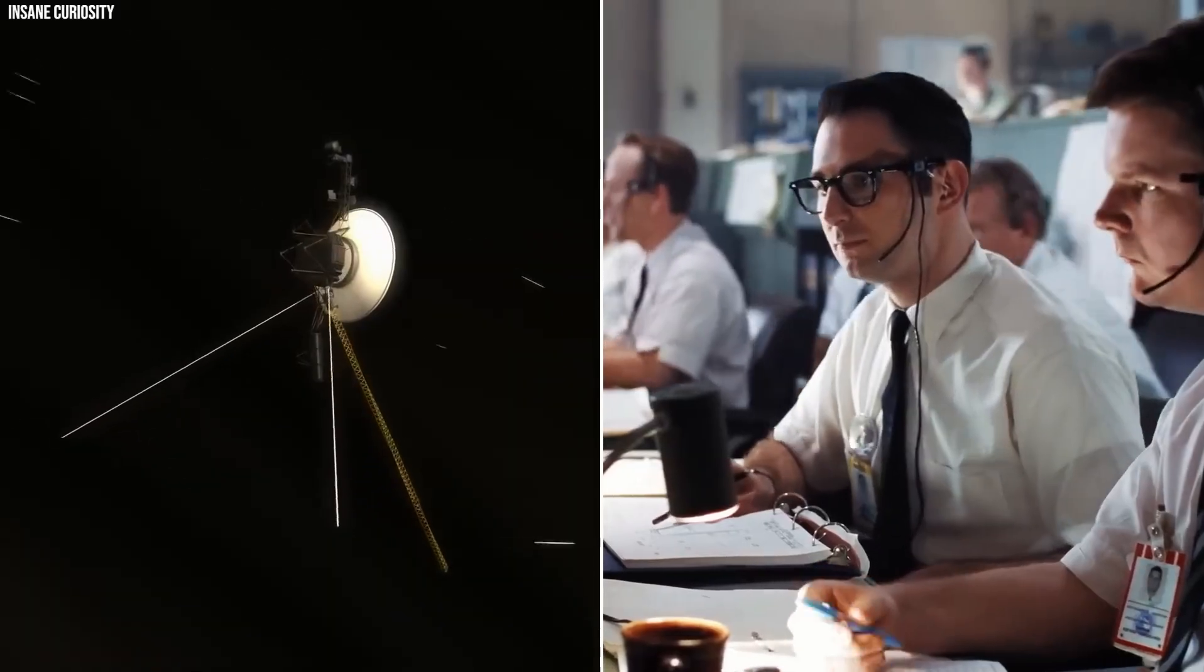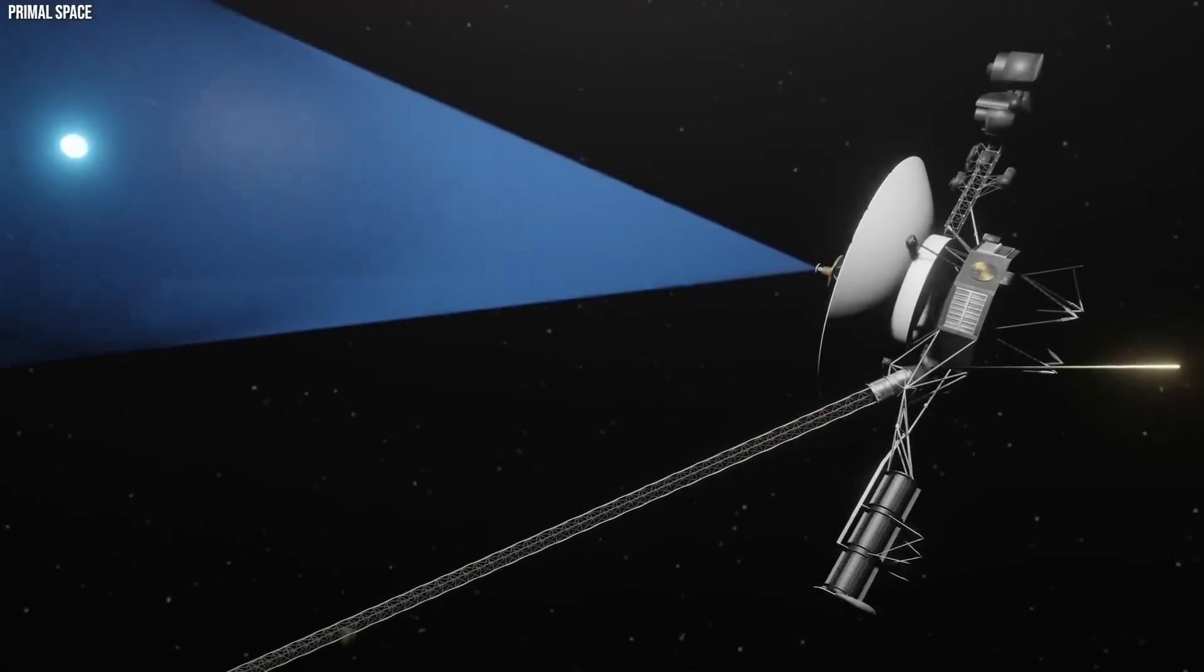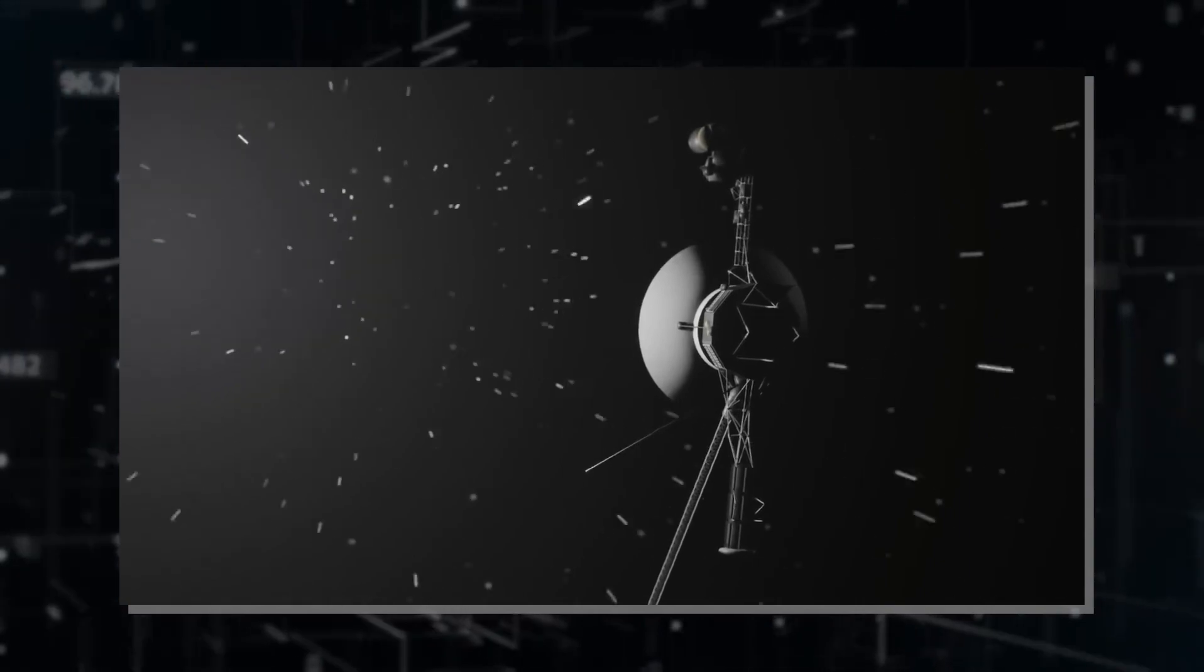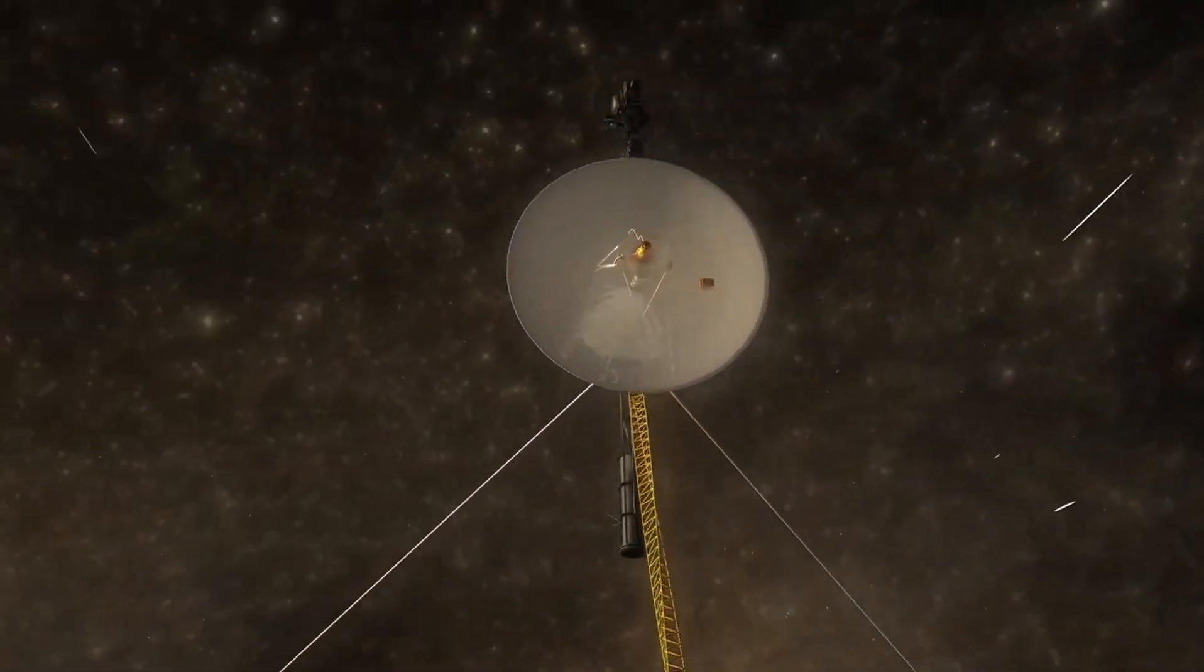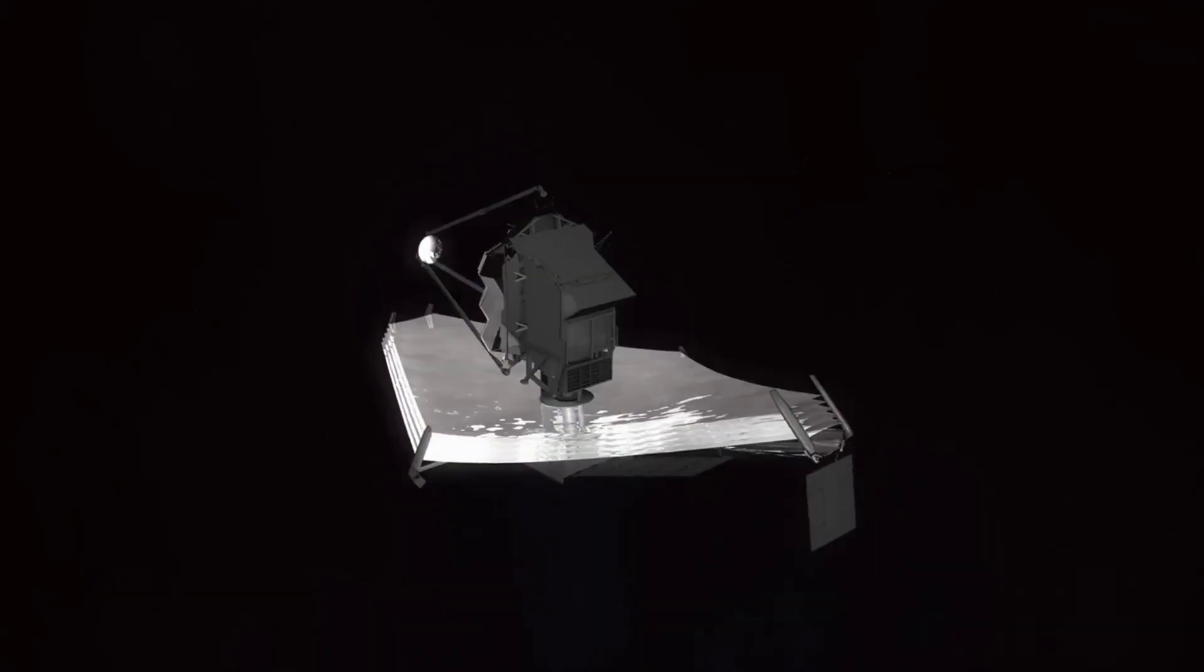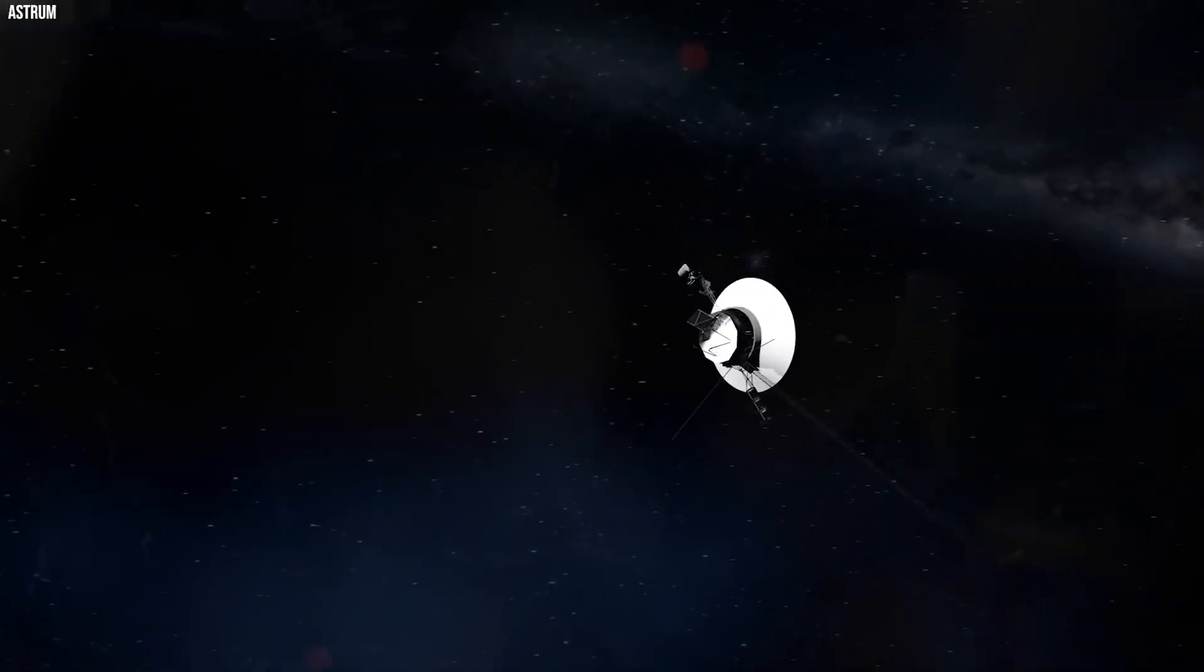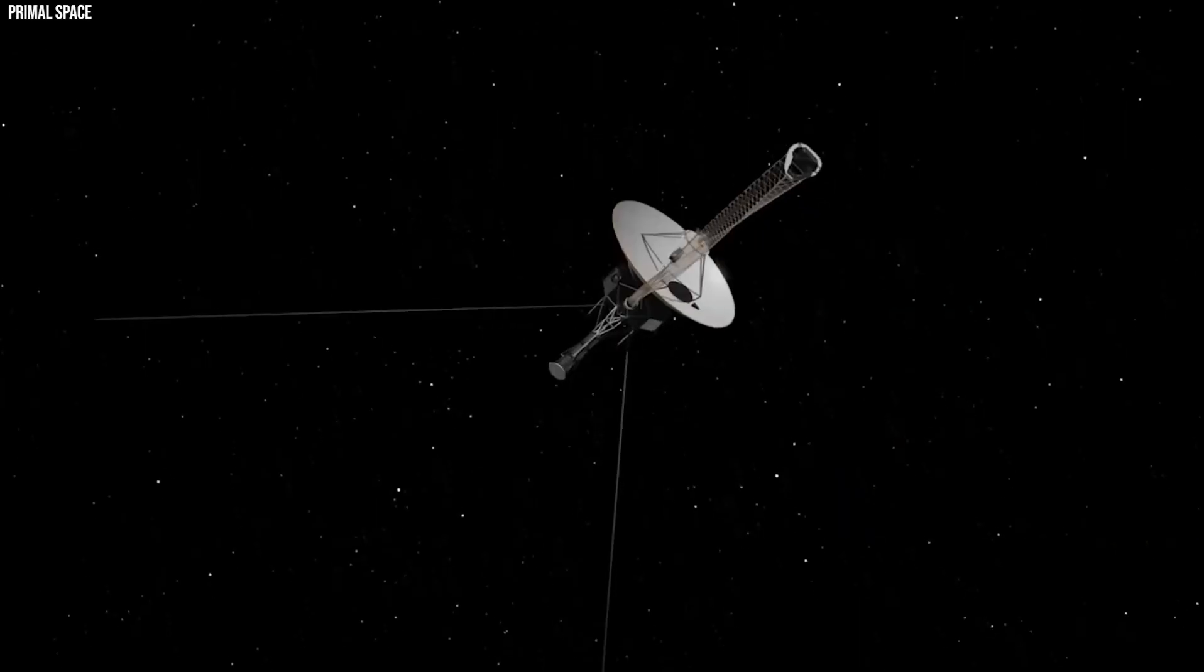Equipped with 12-feet-wide dish antennas, the Voyagers used radio communication traveling at the speed of light to send and receive messages. But their immense distance from Earth, advancing by three or four light seconds every day, presented challenges in staying connected. The signals from Voyager 2 took over 18 hours to catch up, and the growing interference from Earth's noise, including radios, televisions, cell phones, and more, made it increasingly difficult to hear the faint whispers from the spacecraft.